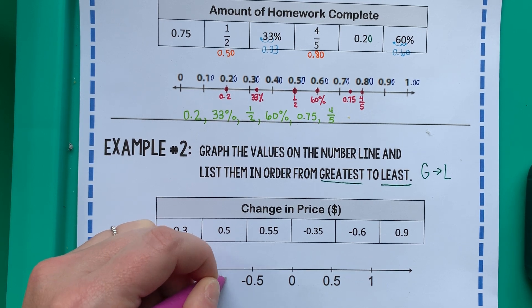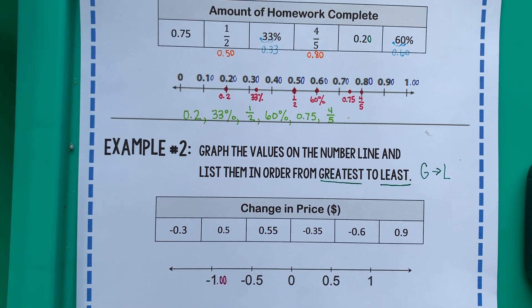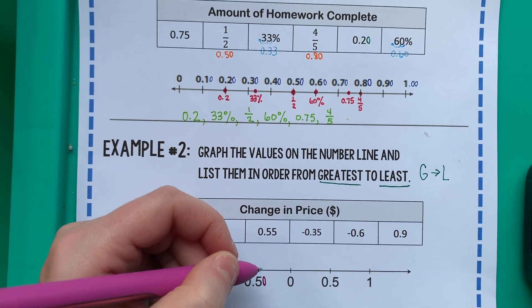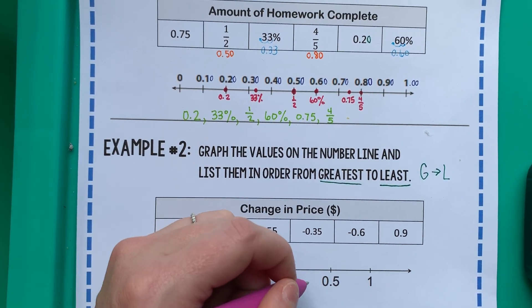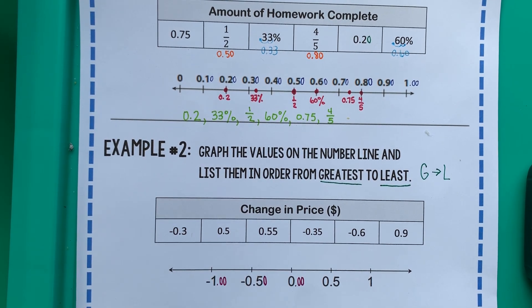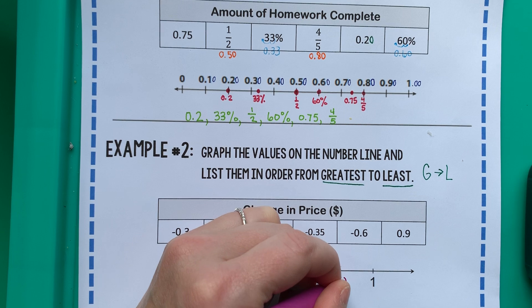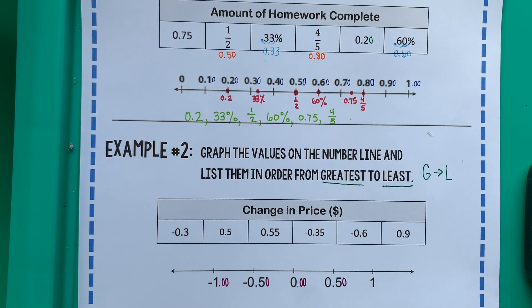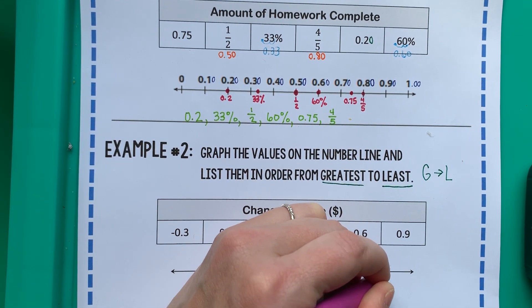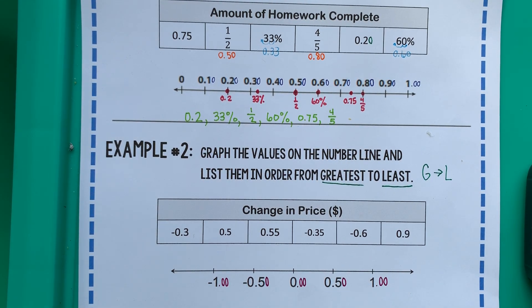So this would be like negative a dollar — that's if you owe someone a dollar. Negative 50 cents means you owe somebody 50 cents. Zero means you're broke, but at least you don't owe anybody money. 50 cents means you've got 50 cents in your pocket. And a dollar — you're still pretty broke, but at least you have a dollar in your pocket.